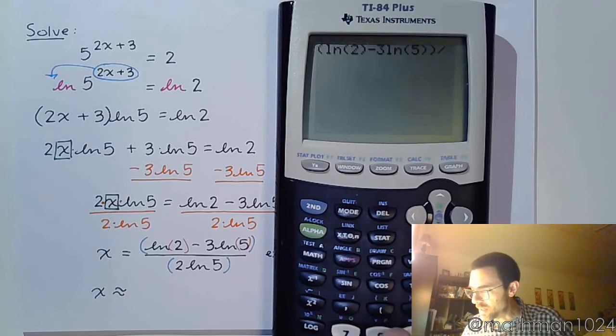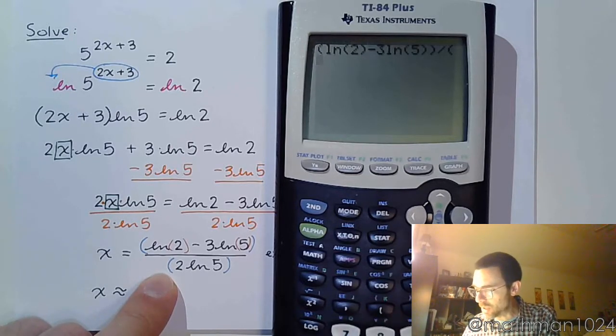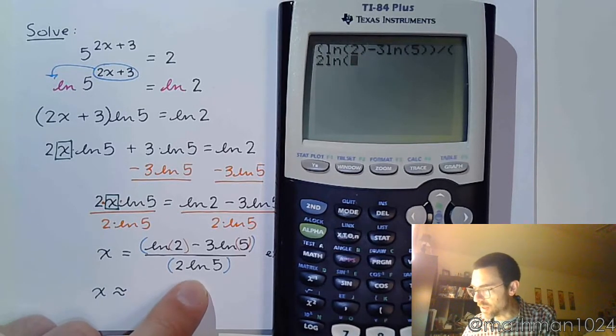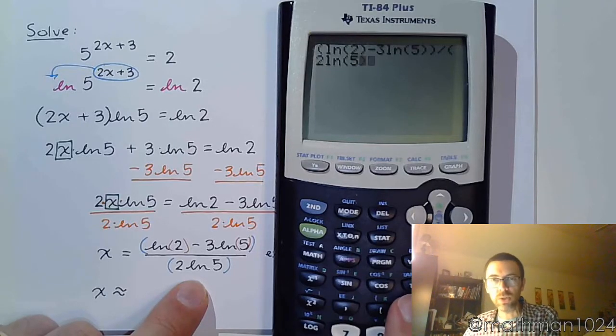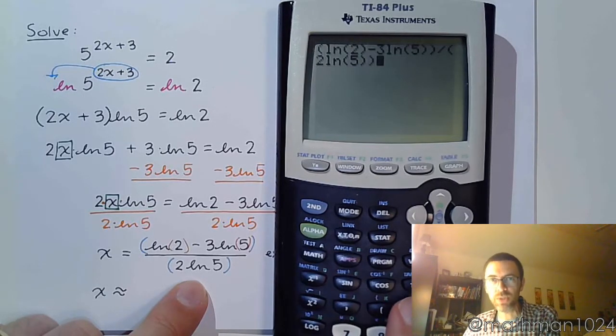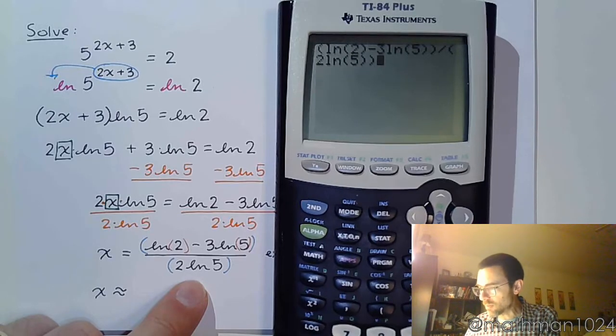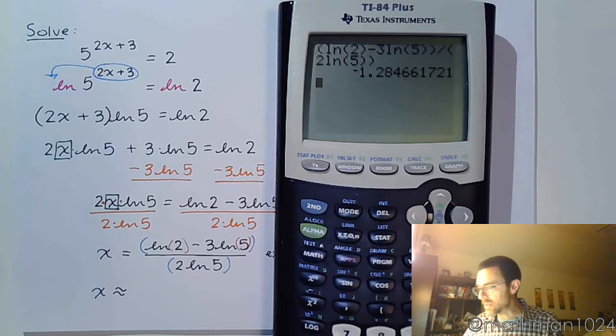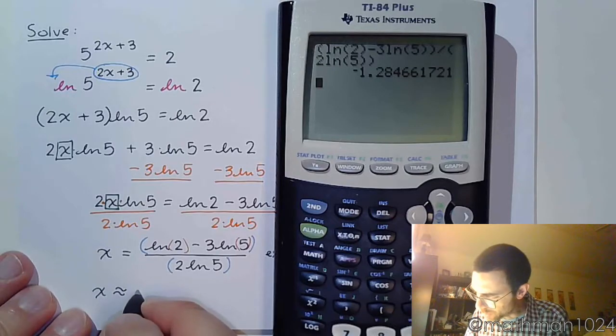Divide by parentheses for my denominator. 2 natural log 5. Close the natural log. Close the denominator. And here's what we get.